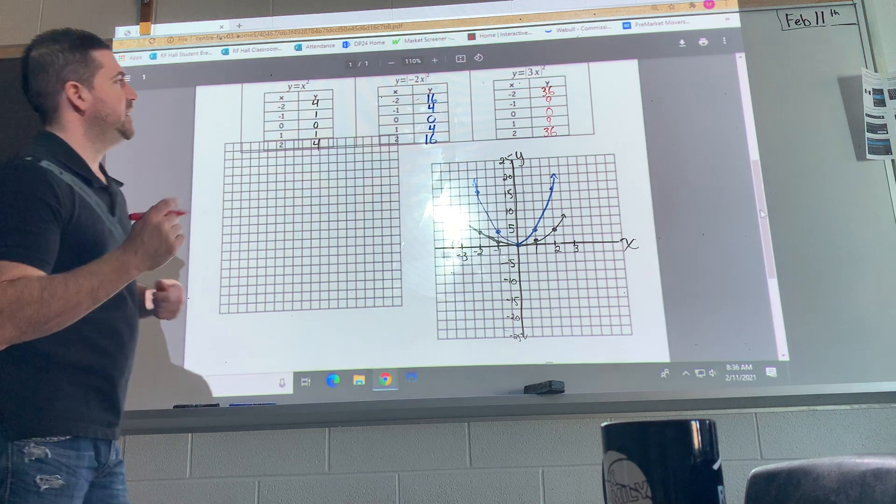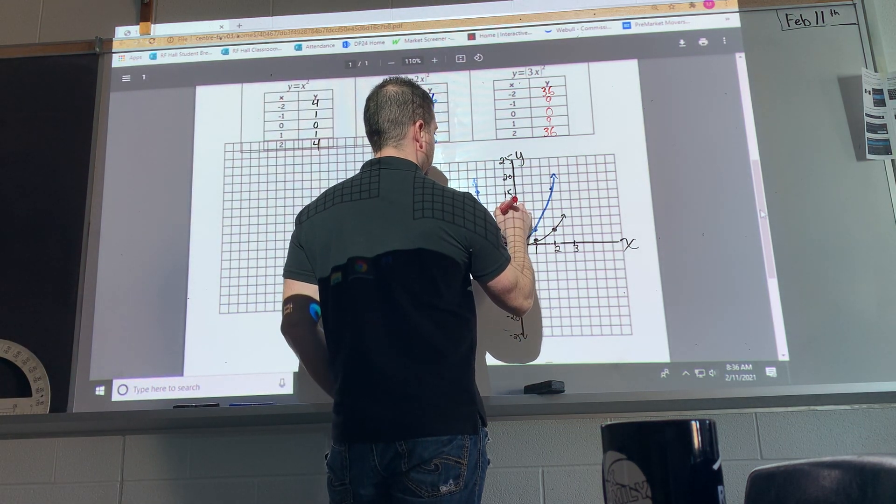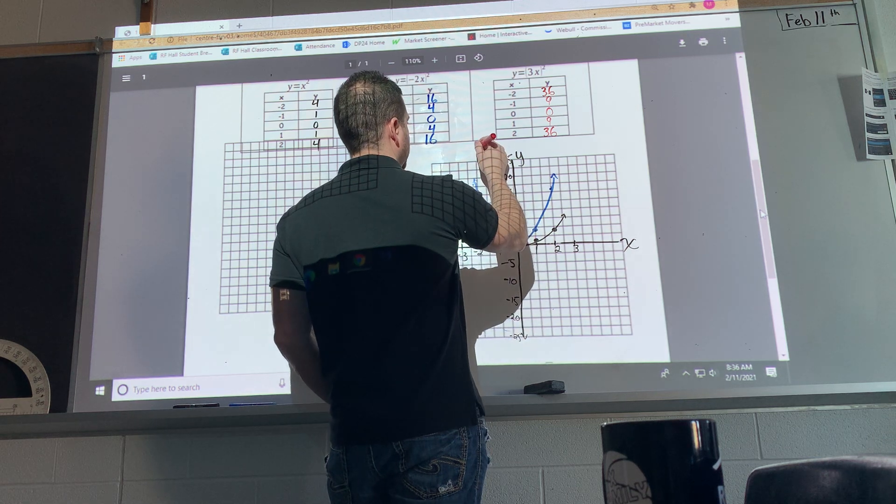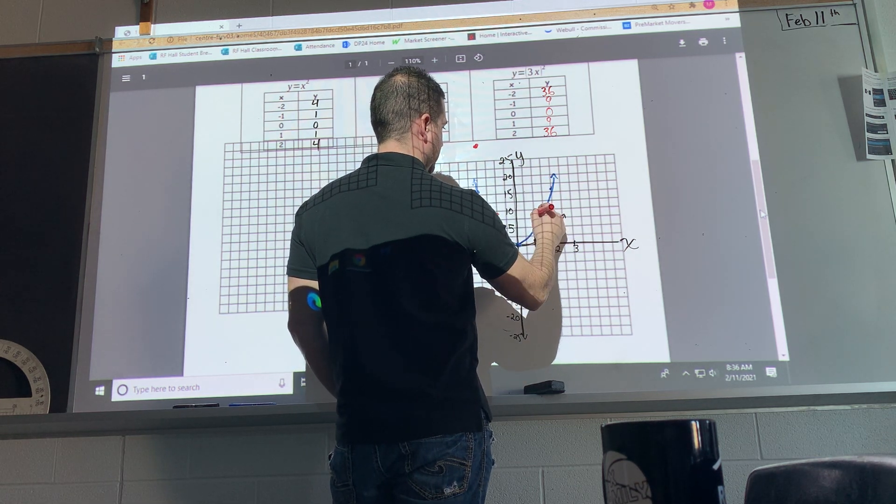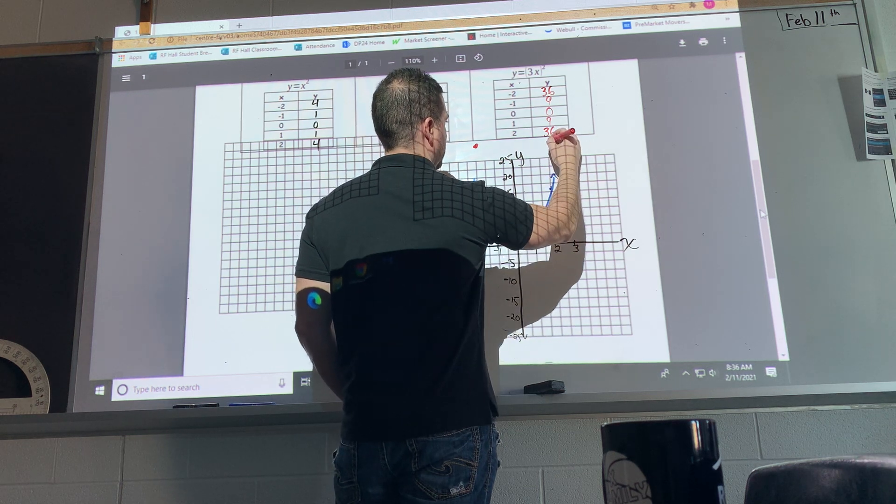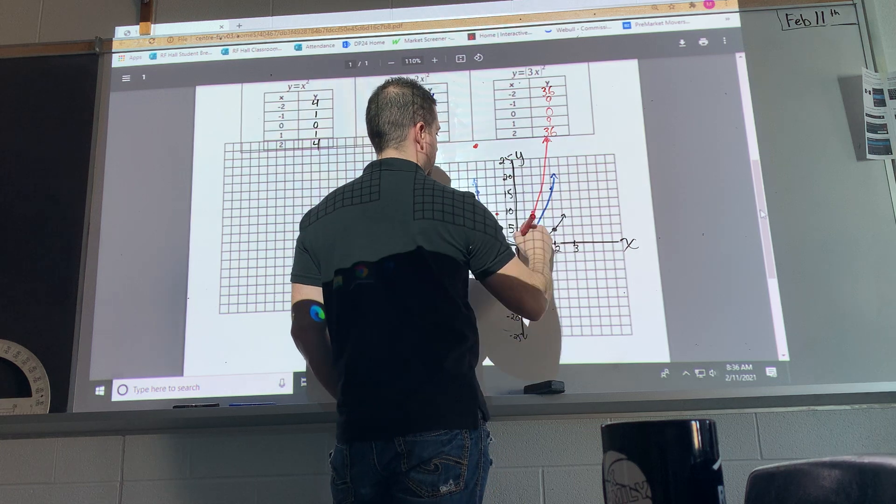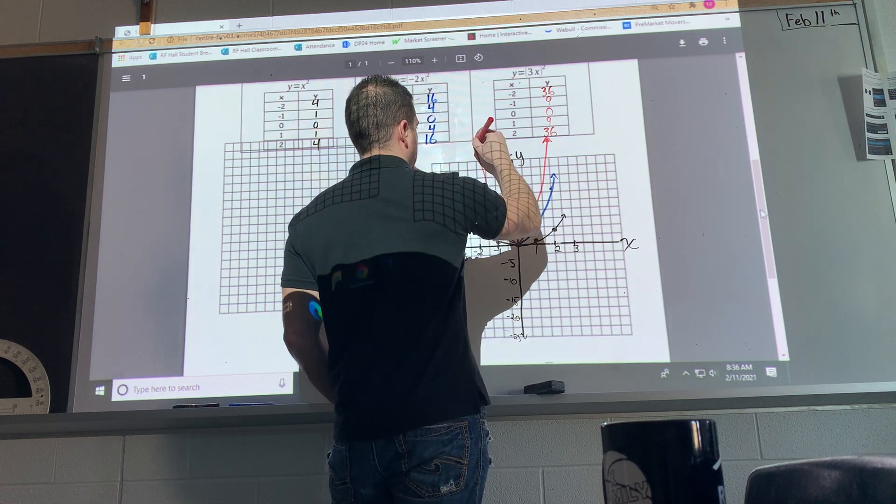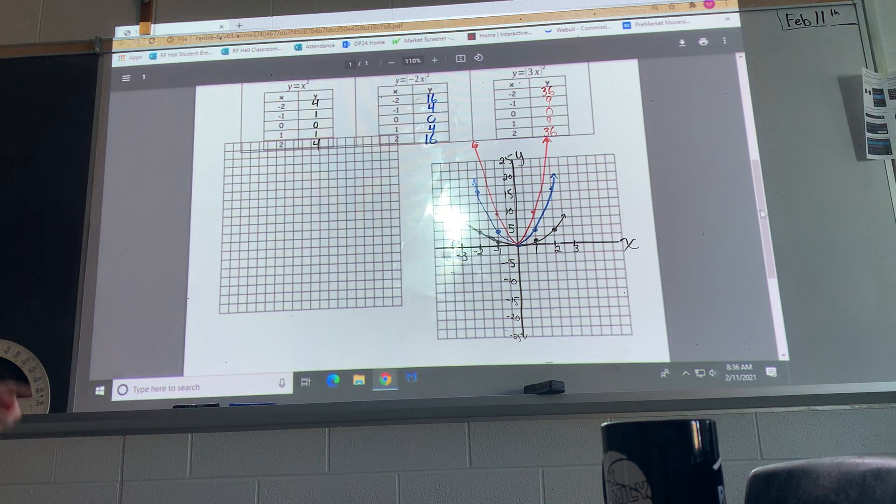And lastly, negative 1 and 9, 2 and 36, I'll say it's up here. Okay, so those would be the three graphs.